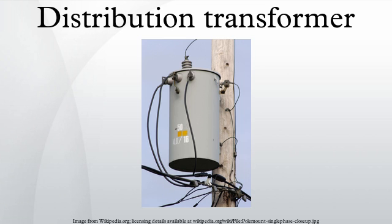Padmount transformers are used in urban areas and neighborhoods where the primary distribution lines run underground. Many large buildings have electric service provided at primary distribution voltage, with customer-owned transformers in the basement for step-down purposes. In a secondary network system, many distribution transformers may be connected in parallel, each equipped with its own network protector circuit breaker to isolate it from the secondary network in case of a fault.